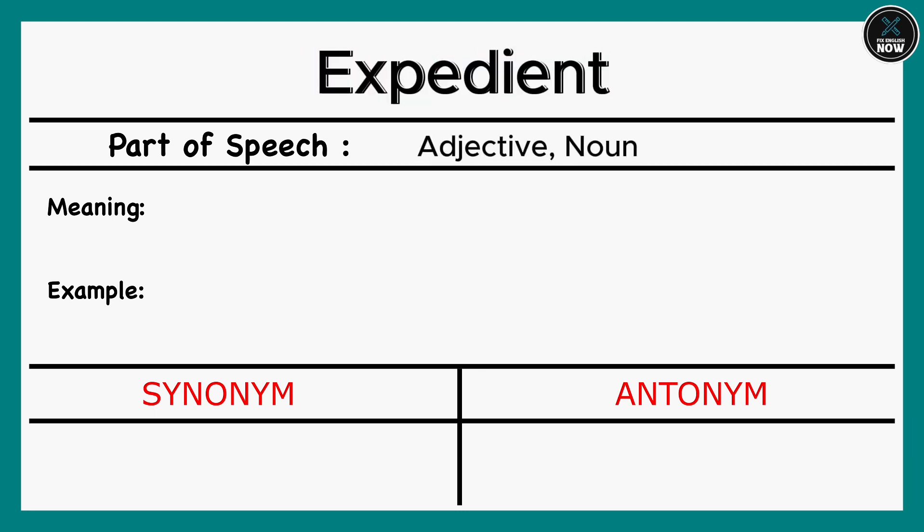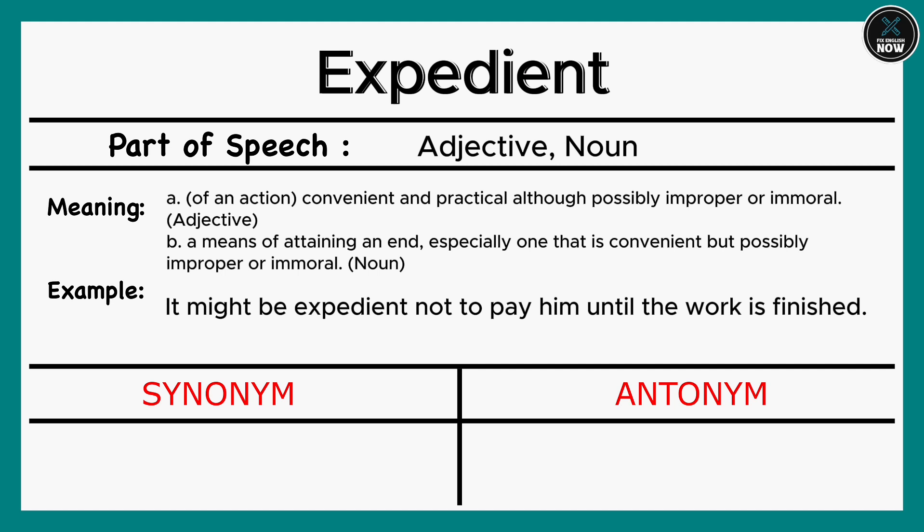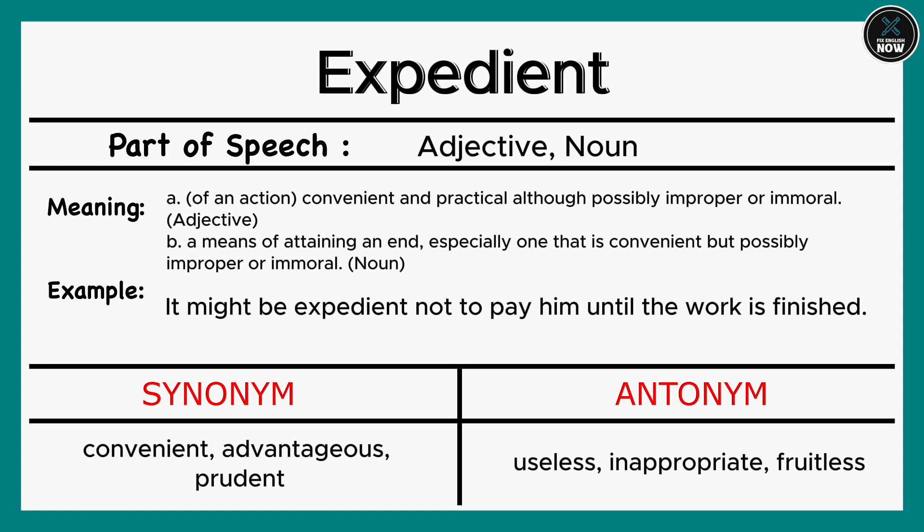Expedient: A. Of an action, convenient and practical, although possibly improper or immoral (Adjective). B. A means of attaining an end, especially one that is convenient but possibly improper or immoral (Noun). Example: It might be expedient not to pay him until the work is finished. Synonyms: Convenient, Advantageous, Prudent. Antonyms: Useless, Inappropriate, Fruitless.